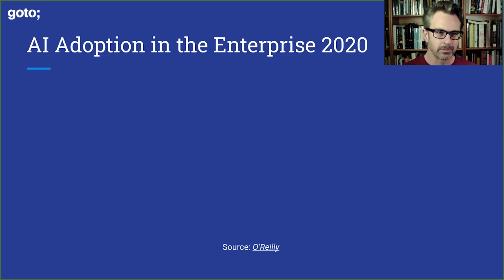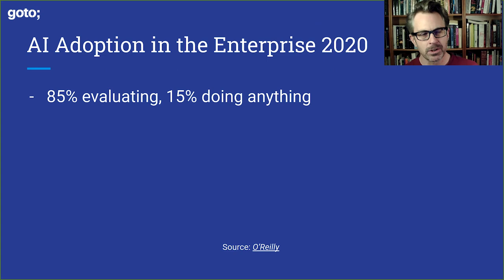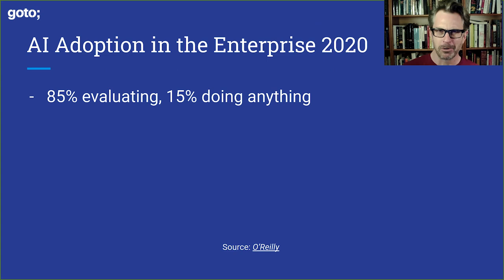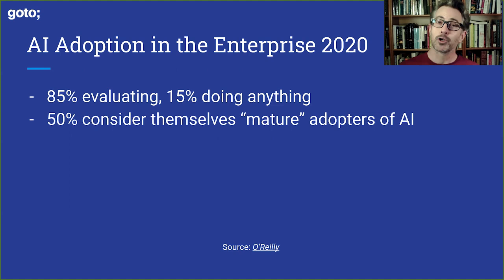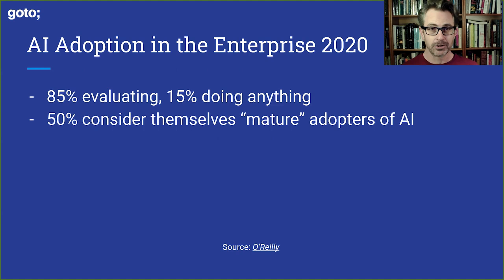So this is interesting. These are enterprises: 85% evaluating, and this is 2020, with 15% doing anything. For a number of years I was seeing numbers like a third of projects are machine learning — but I don't see that in the field, and this feels quite a bit more accurate. 15% doing anything feels about right to me. Now, interestingly, 50% of the respondents consider themselves to be mature adopters of AI. With only 15% doing anything, at least 35% of these people are possibly stretching the definition of mature.